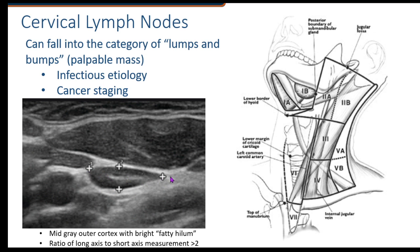These calipers are here to demonstrate what we consider a normal lymph node. When we look at the lymph node and measure its longest length compared to its AP or width, we want the ratio to be greater than two. So the long axis to short axis measurement greater than two indicates a normal lymph node.